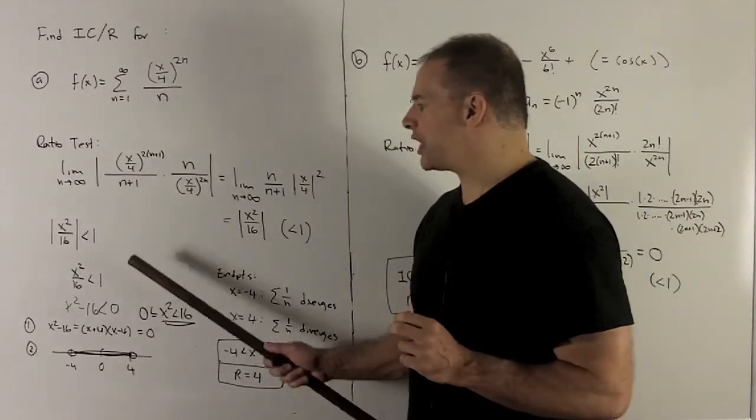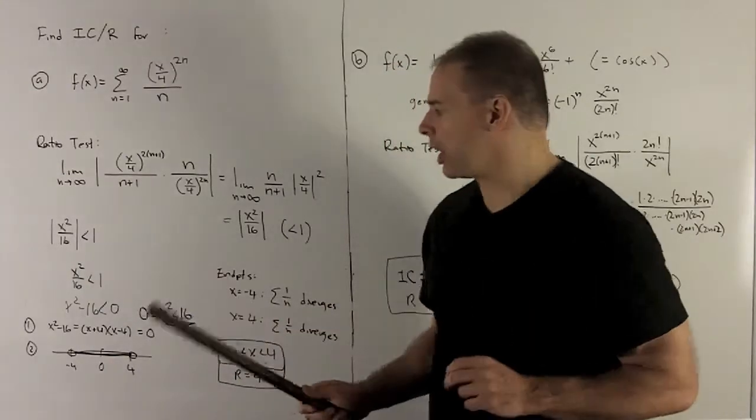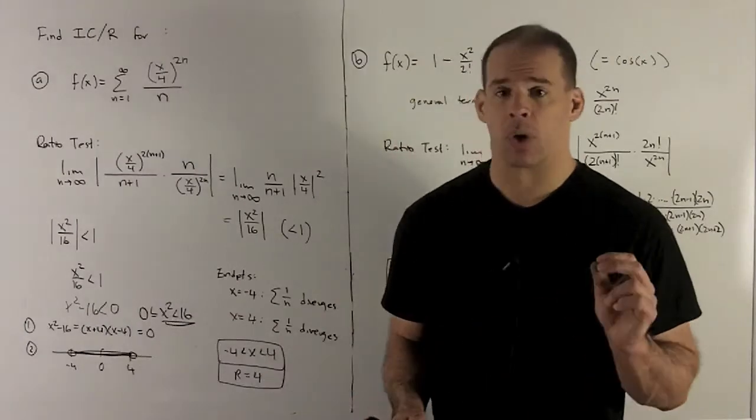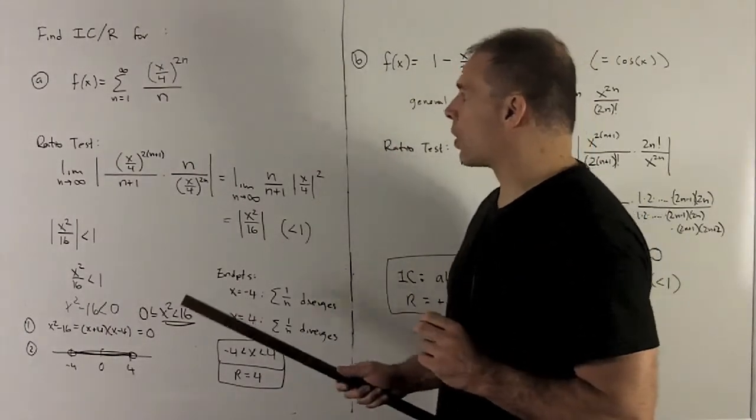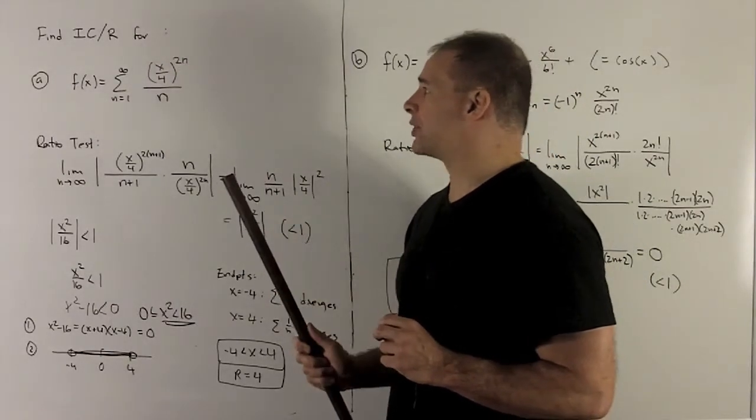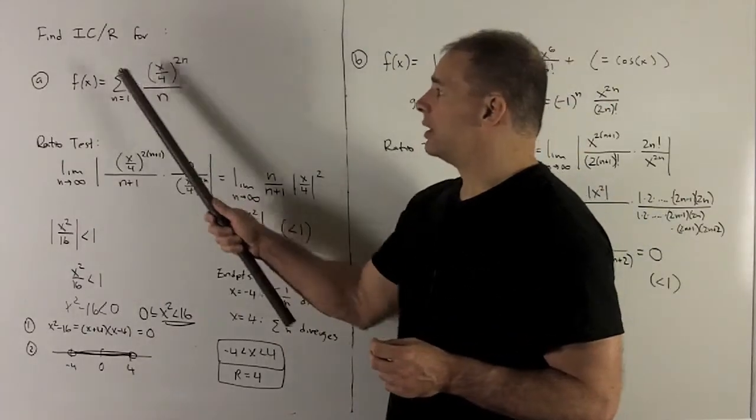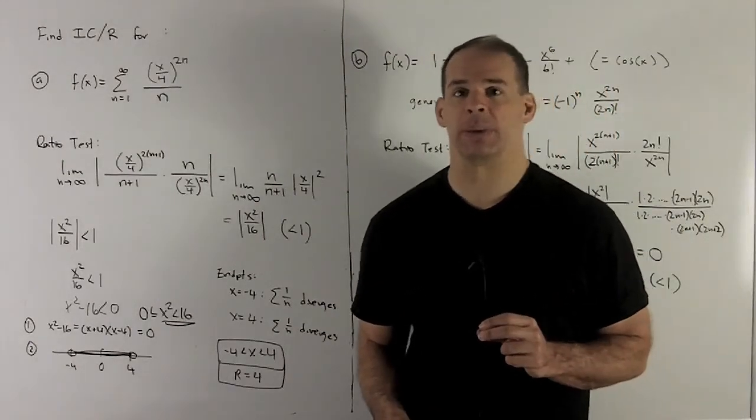Now note, that's just checking against the ratio test. We still have to check the endpoints. Although I check the endpoints here for the inequality, that's not checking them for our original series. So what I'm going to do is we're going to take our 4 and minus 4, put it into the original equation. If I put a 4 in here, that's going to be 1 raised to the 2n, which is always 1. So I'm looking at series for 1 over n, and that's going to diverge. That's a p series of p equal to 1.